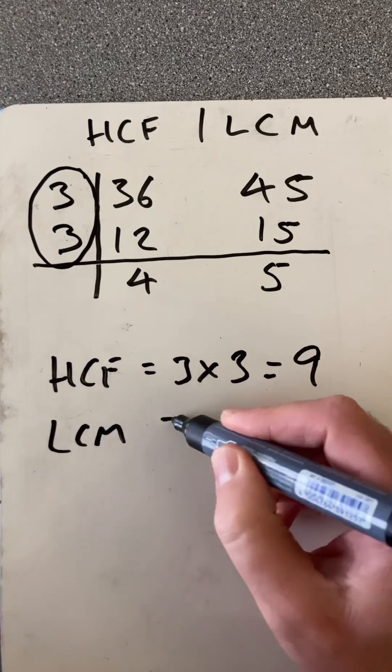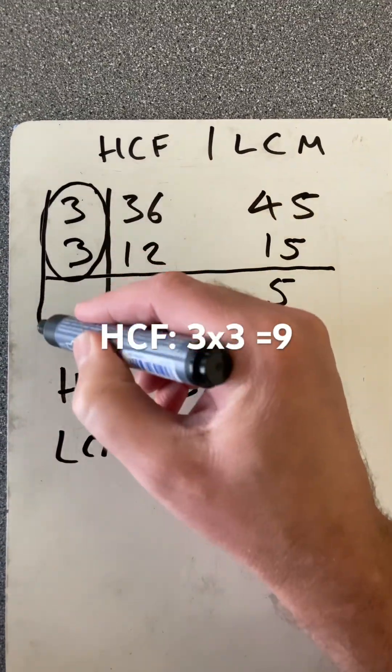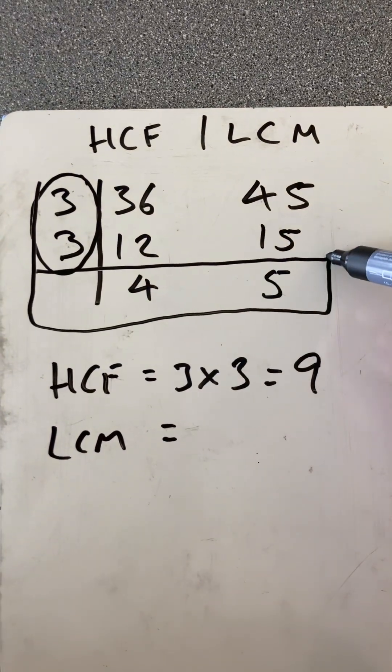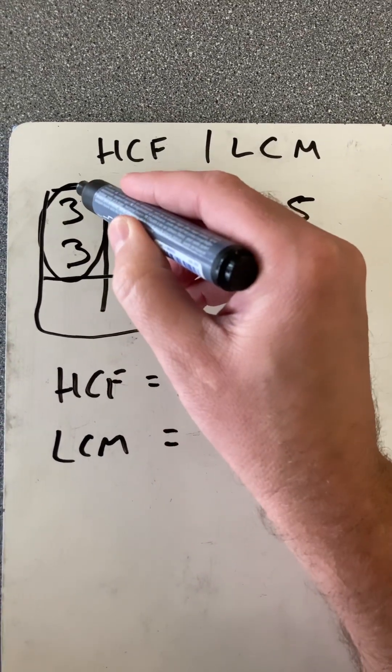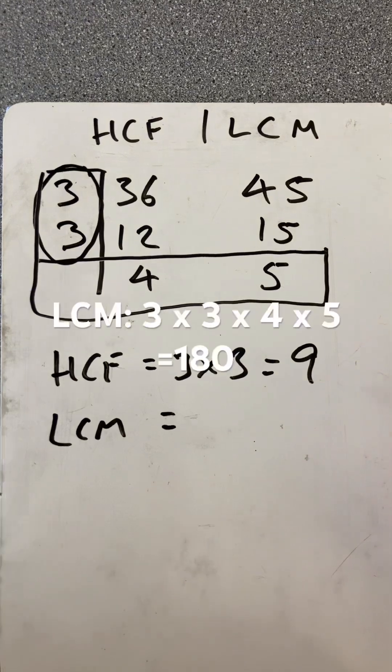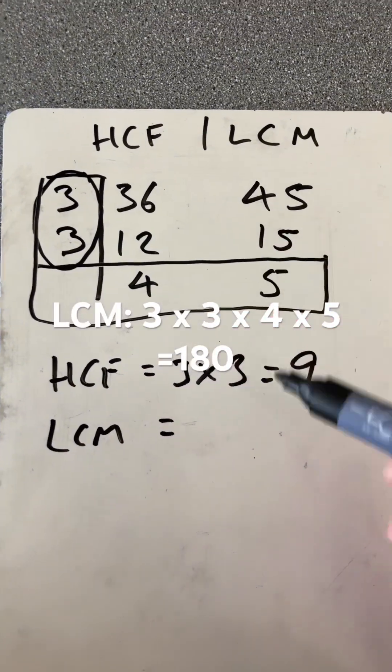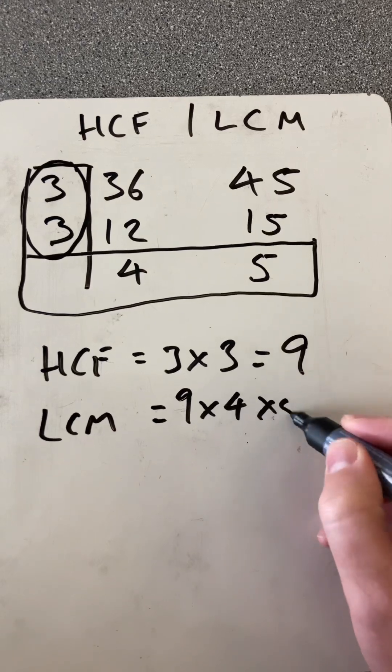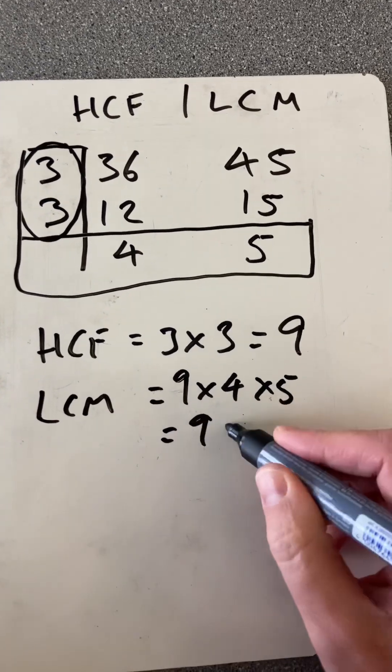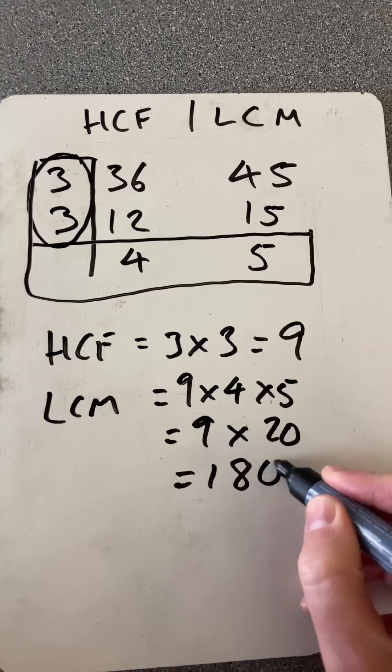And the lowest common multiple is then the product of all of these. If we're doing the Venn diagram, that would be in the overlap. And then these would be either side of the circles. So I'd have 9 times 4 times 5, which is 9 times 20, which is 180.